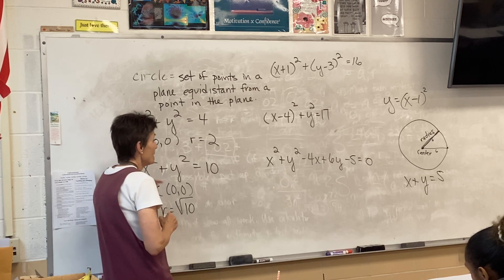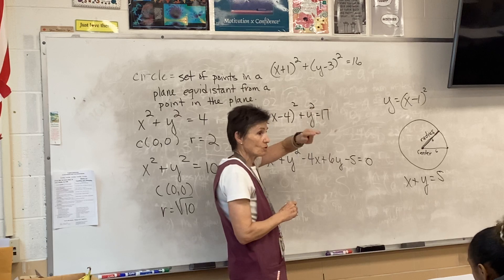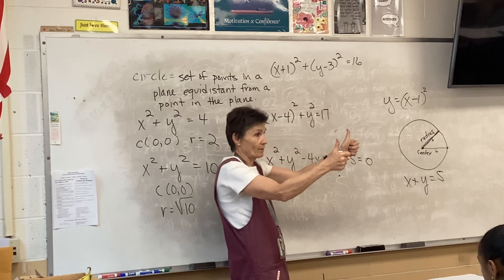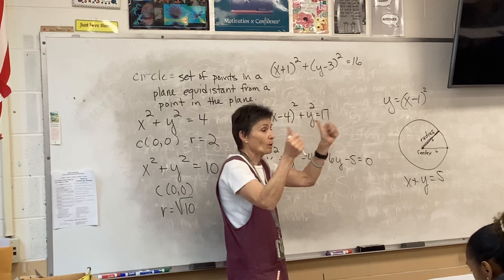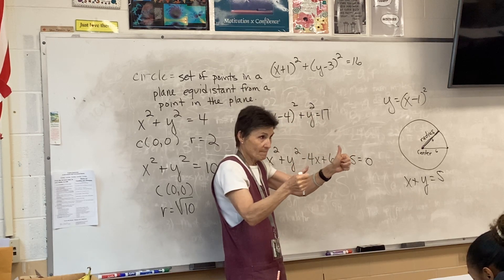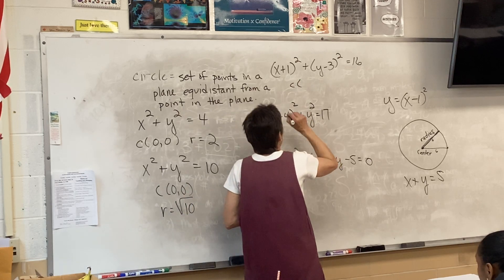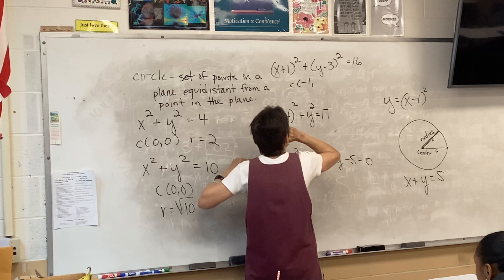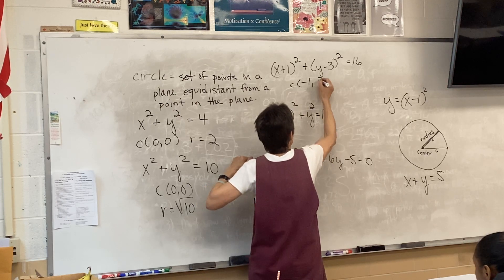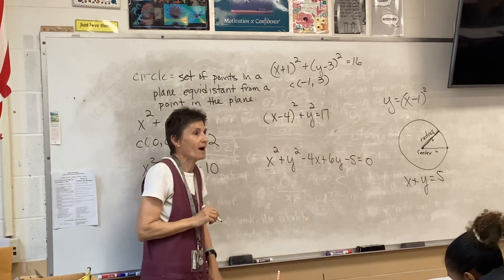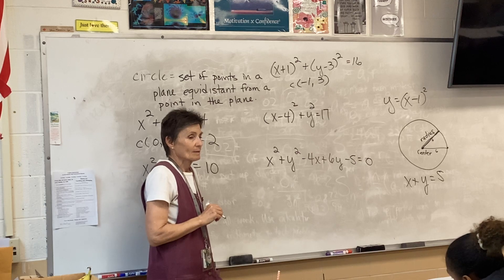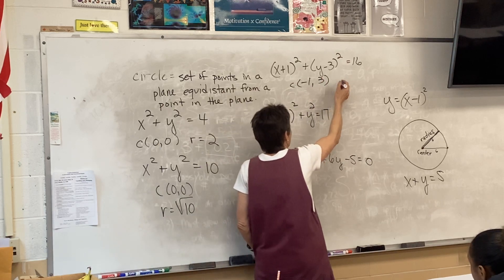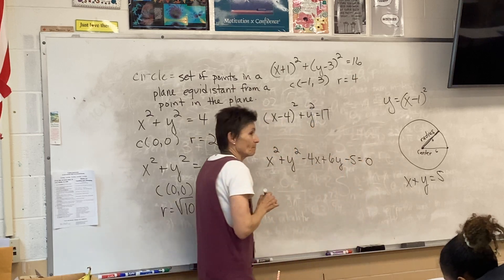This one looks a little tougher. First of all, is it still a circle? Yes — because if you foiled it all out, you'd have an x squared plus a y squared. Where's the center of this one? Negative 1, positive 3. Remember, it's always the opposite when it's inside the parentheses. So this one is going to be negative 1, comma 3. And the radius? 4. Perfect.